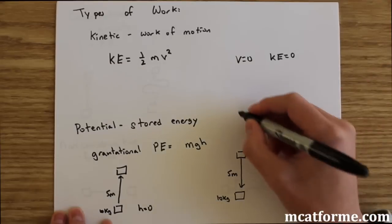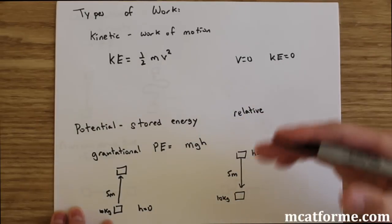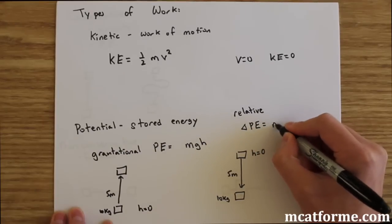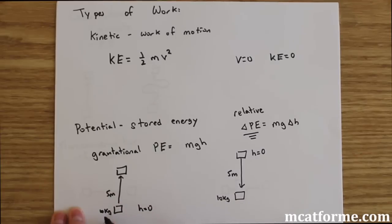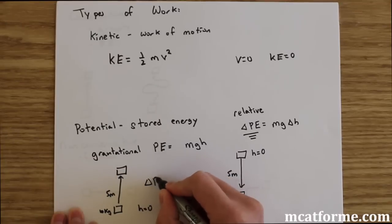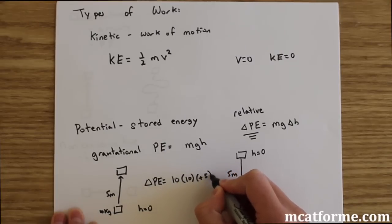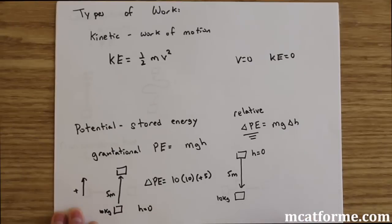One important thing about potential energy is that it's relative — we can set height as an arbitrary value. What we're mainly dealing with is not the actual potential energy of an object but the change in potential energy. For example, with a 10 kilogram object starting at h equals 0 and moving up 5 meters, the change in potential energy equals 10 times 10 times positive 5, because upward is positive.